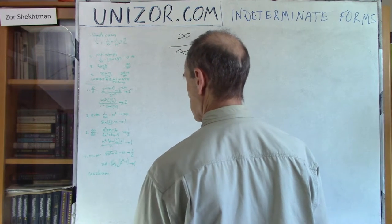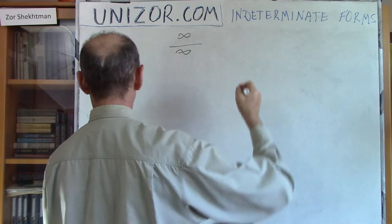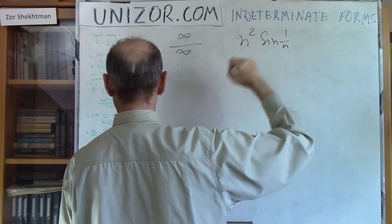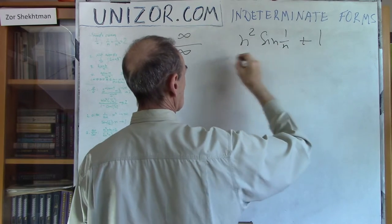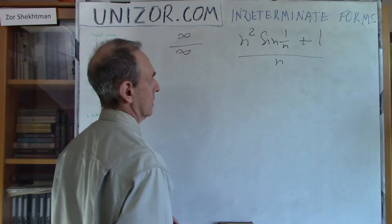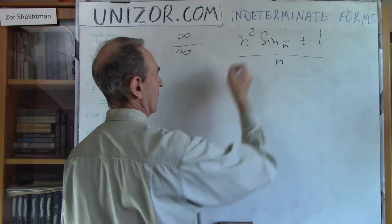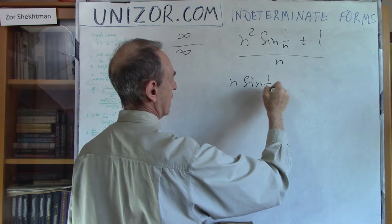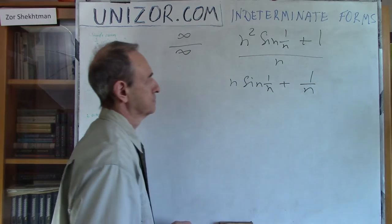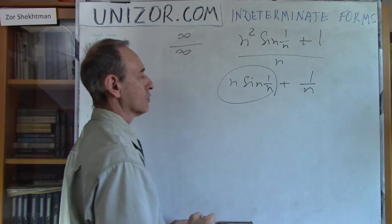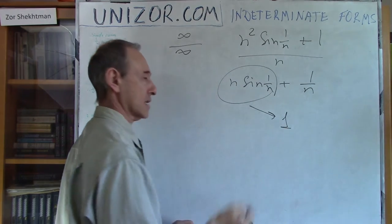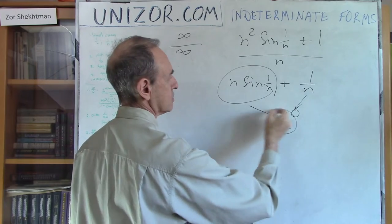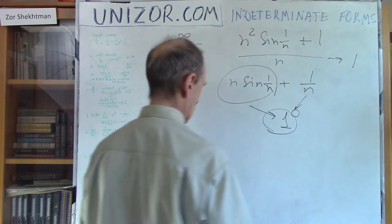Here is another one: n² sin(1/n) plus 1/n. Dividing n² by n I have n·sin(1/n) plus 1/n. We have already established that n·sin(1/n) converges to 1 — that's the previous problem. And 1/n is infinitesimal, so it goes to zero. The result will be 1, so this thing is converging to n... that is, to 1.